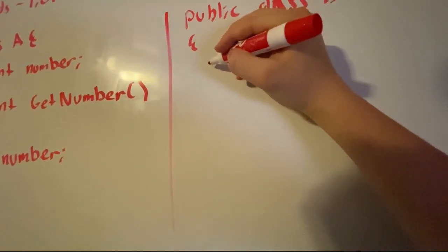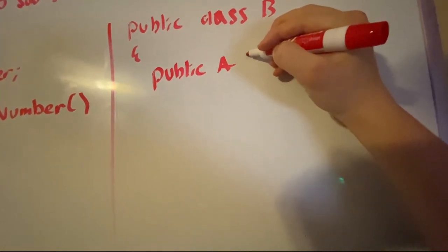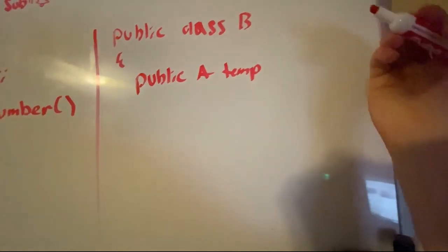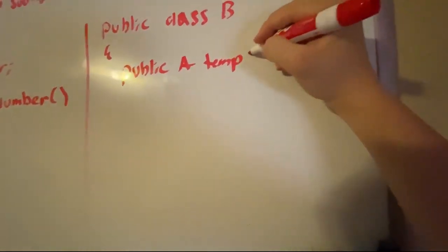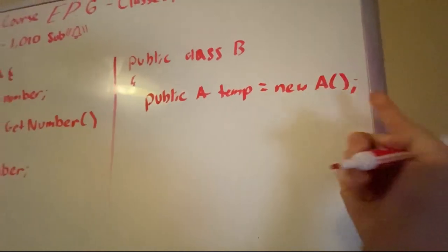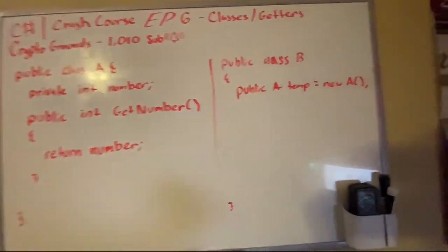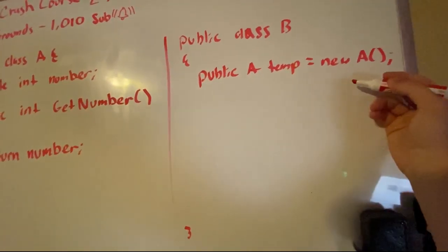So basically we need to make public A temp equals new A. We don't have any constructor, so it's just blank because the default is just going to be zero. So this is going to be zero because we don't have any constructor. So what we can do here...